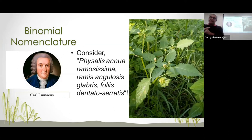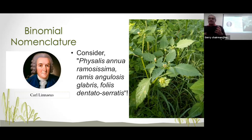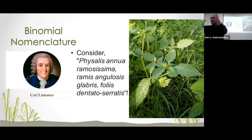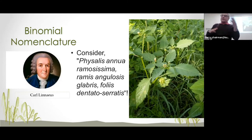Just look at the name there: Physalis annua ramosiscima, ramos angulosus glabris foliis dento serratus. This was the name given to this plant before 1735. Basically it means it's an annual flower, it's branched, the branches come out at angles, and glabris means smooth — so they're hairless branches. And the leaves, folis, are dento serratus — they're dentated and serrated. As you can see, that's a bit of a mouthful. Going into a nursery and asking for this and a few other plants might take up most of the time you've set aside.